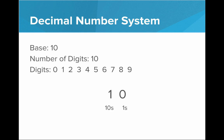So now we can represent 10 and keep counting upwards. What happens when we get to 99? Now we're out of digits again. How are we going to represent 100? Just like last time, we'll put a 1 in front and set everything after it to 0, with the understanding that this new place is worth 100. We now have the 1s place, the 10s place, and the 100s place.